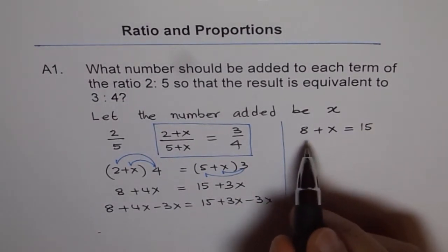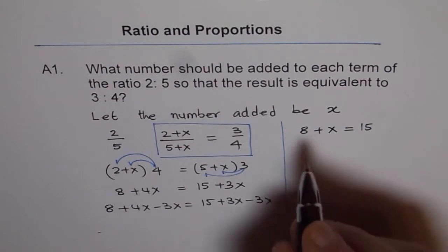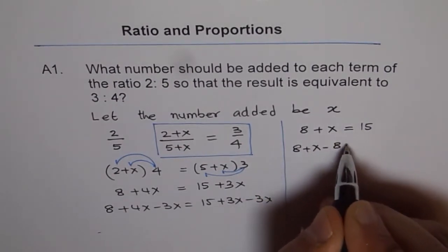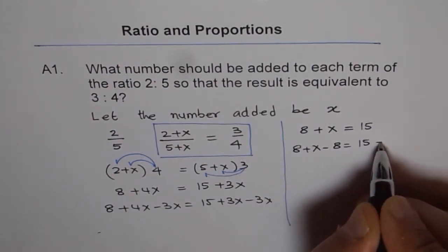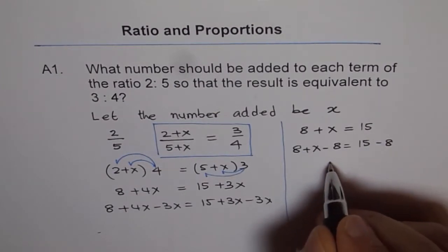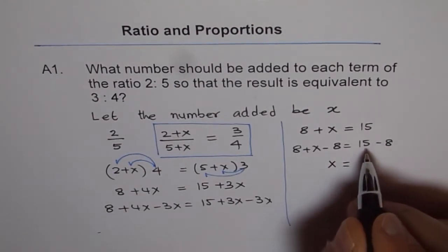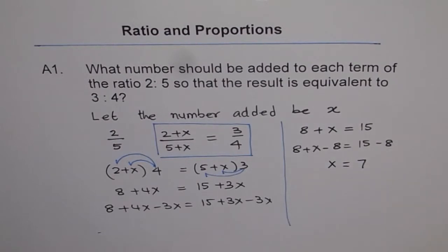Now, to find x, let's take away 8. So, we have 8 plus x minus 8 equals to 15 minus 8. So, we have x is equals to 15 minus 8 as 7. Do you see that? So, our new term will be, after adding 7...